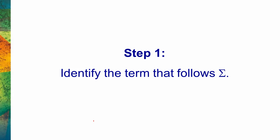Let's get to the steps now. Let's make sure we understand how to do this, now that we know some of the basic symbols we're going to encounter. I'm going to teach you three different steps, and then we're going to go through several examples. In step one, we have to identify what term follows sigma.